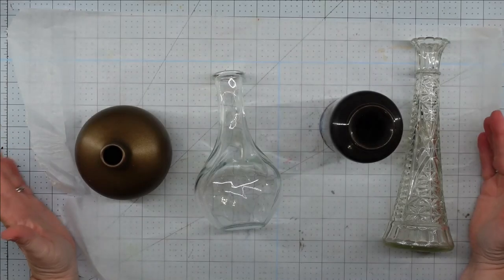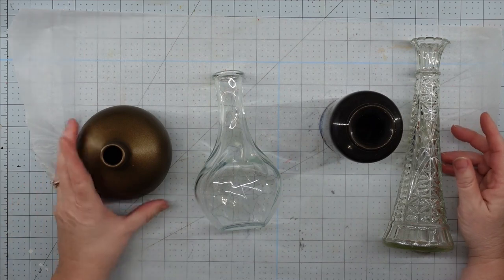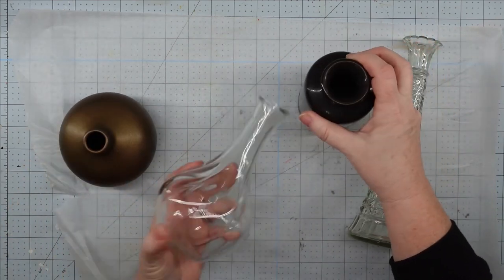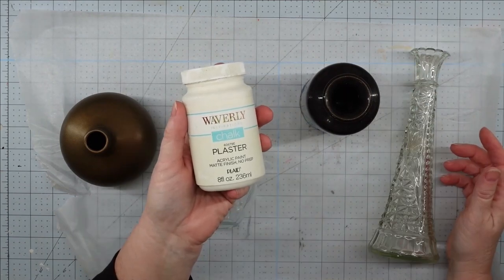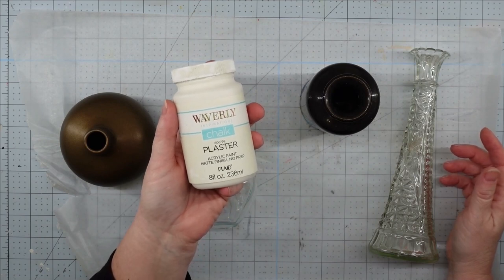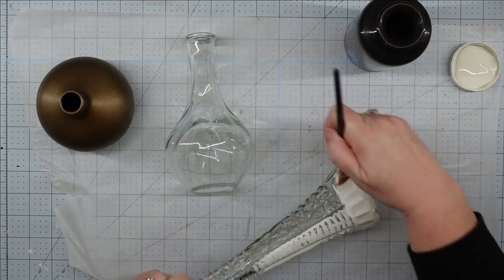Hey y'all, it's Trish. For this project we're going to take some bud vases and some various glassware that I got from Goodwill Outlet and turn them into candlesticks. We're going to use a little bit of Waverly chalk paint in Plaster and some sandpaper, and we are going to transform these into a set.